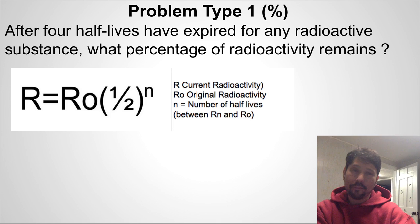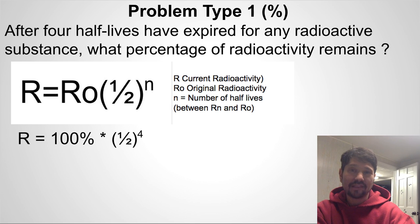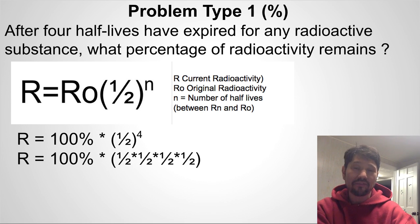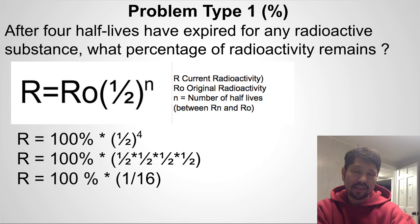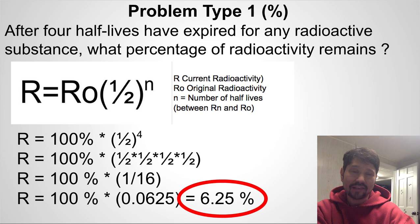Problem type 1 done the math way uses the formula. We plug in: R equals 100% times (1/2) raised to the 4, because the question asks what percent remains after four half-lives, so n equals 4. We can expand: 100% times (1/2)⁴ is (1/2)×(1/2)×(1/2)×(1/2), which equals 1/16. And 100% times 1/16 comes out to the same answer — 6 and a quarter percent remaining.